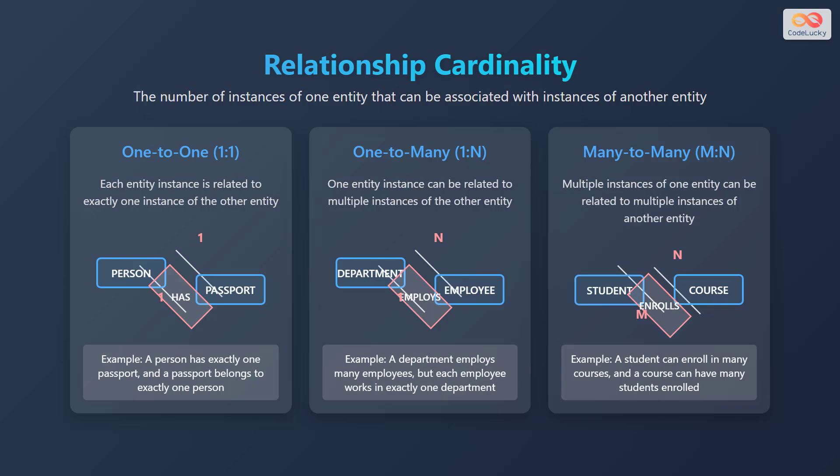Relationship cardinality defines the number of instances of one entity that can be associated with instances of another entity. There are three main types of cardinality: one-to-one, where each entity instance is related to exactly one instance of the other entity; one-to-many, where one entity instance can be related to multiple instances of the other entity; and many-to-many, where multiple instances of one entity can be related to multiple instances of another entity.